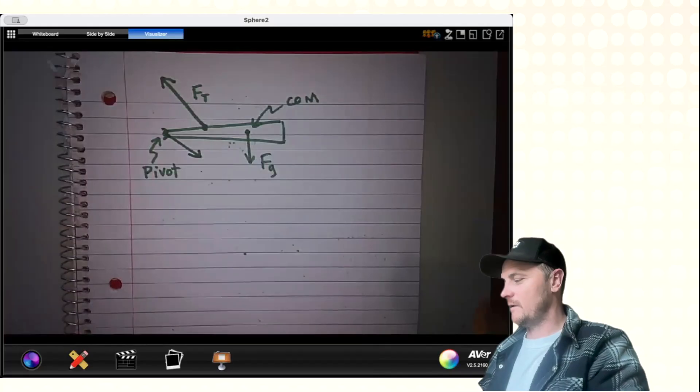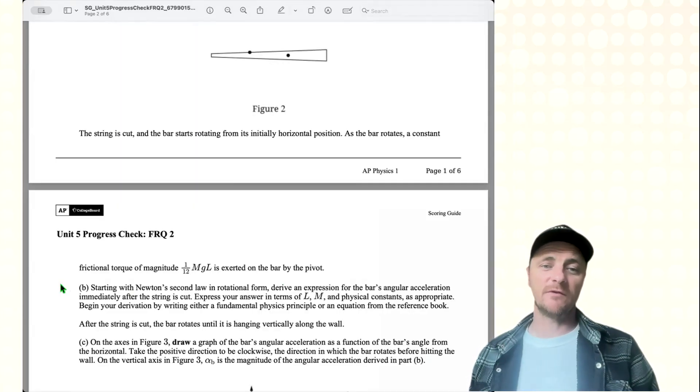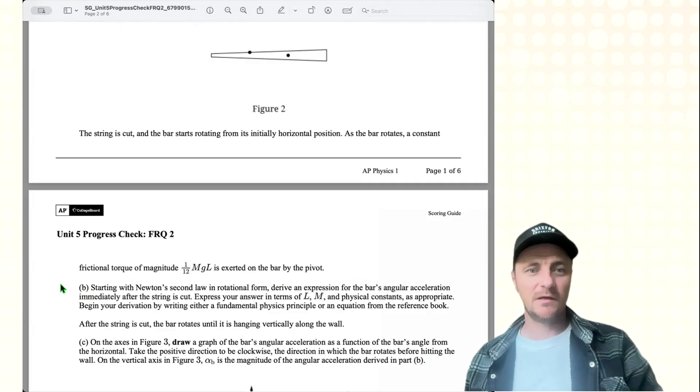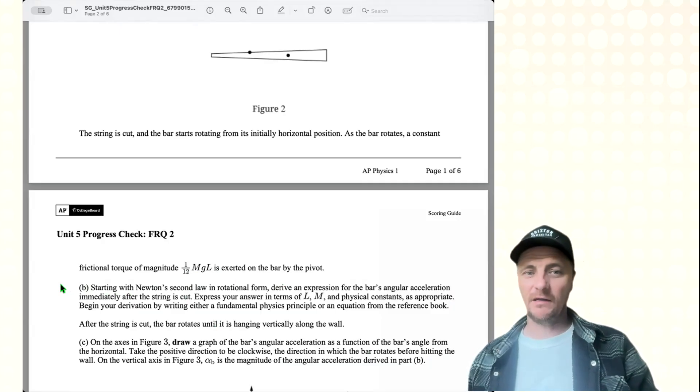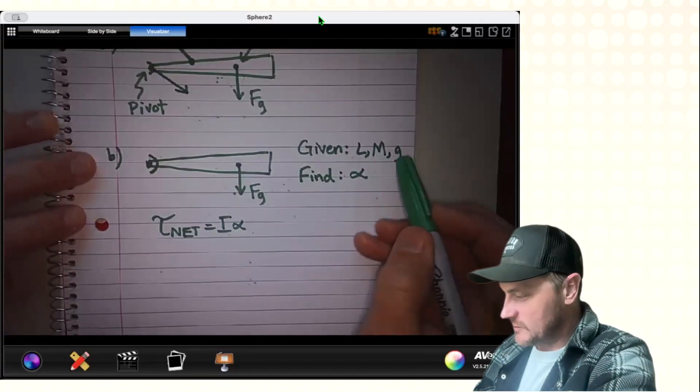Okay, moving on. Part B, starting with Newton's second law in rotational form. Derive an expression for the bar's angular acceleration immediately after the string is cut. Express your answer in terms of L, M, and physical constants as appropriate. Begin your derivation by writing either a fundamental physics principle or an equation from the reference book. Okay, here's our setup. We have given to us L, M, and G. We're looking for angular acceleration.